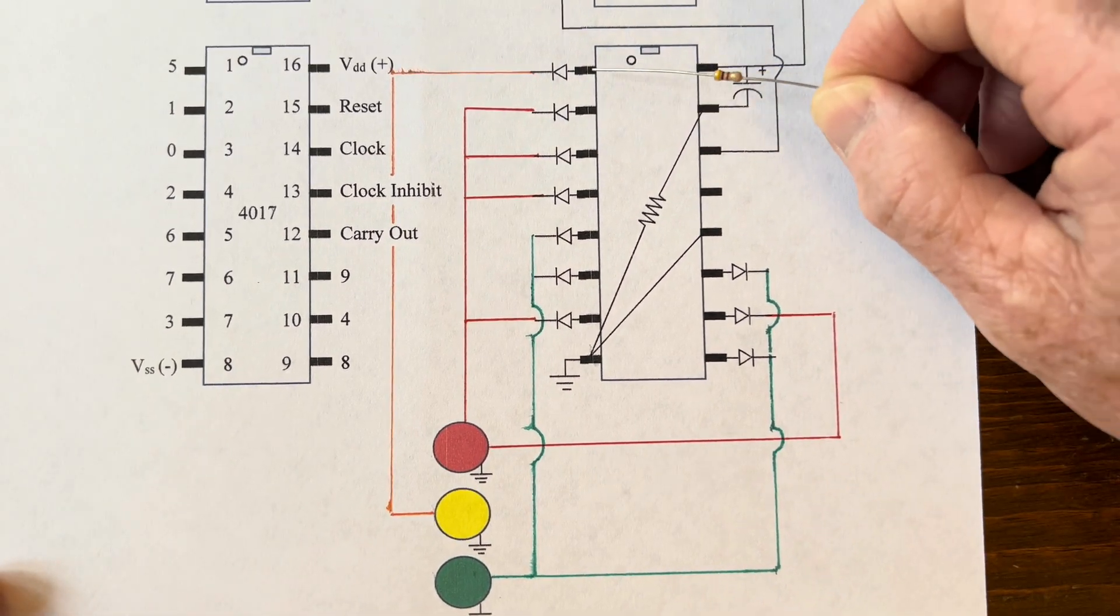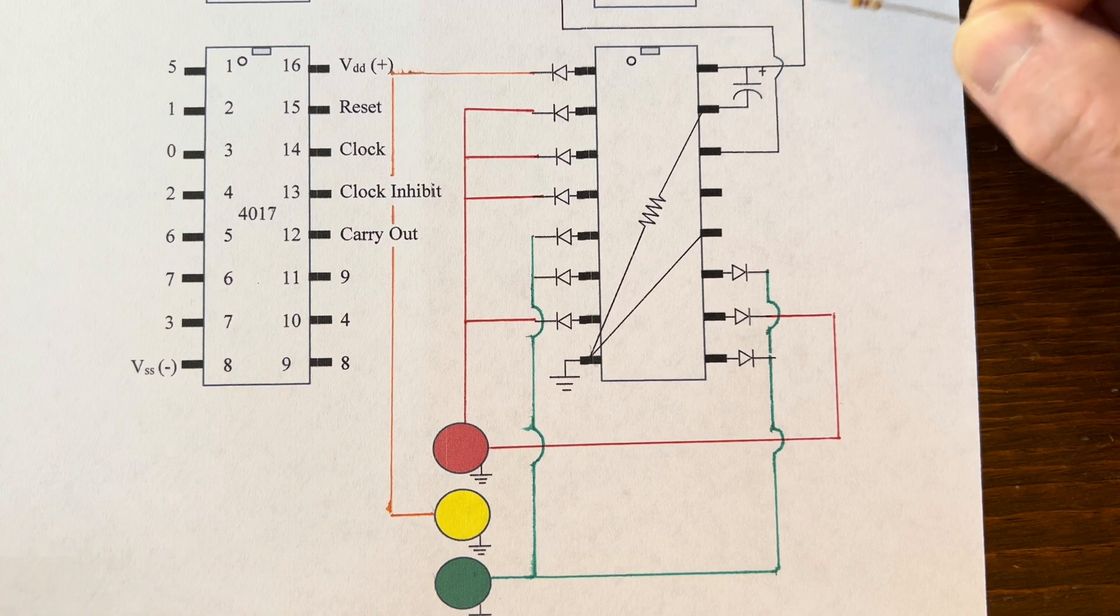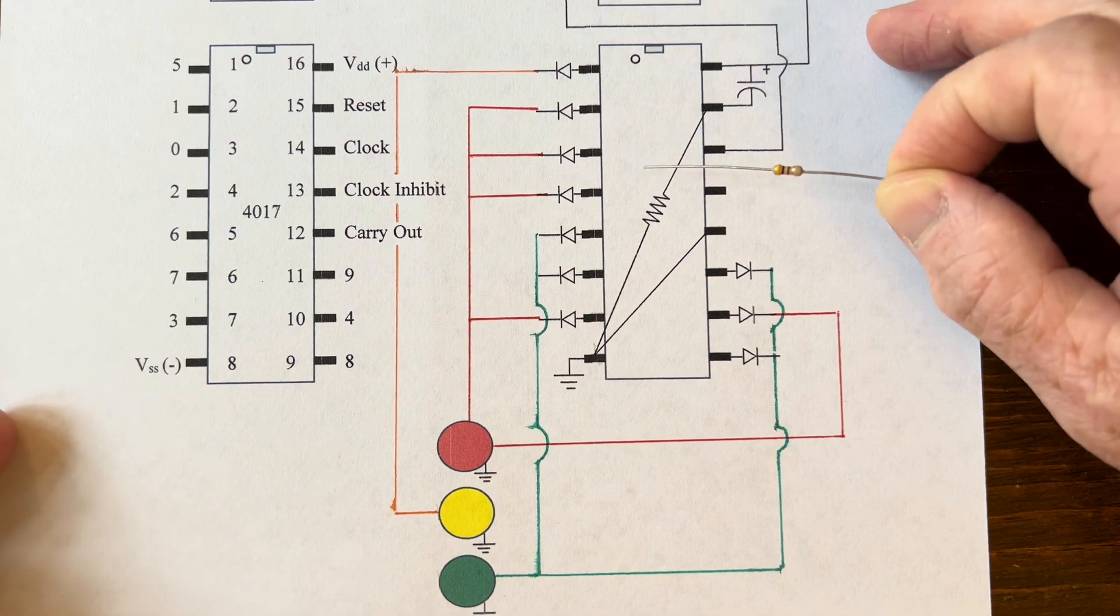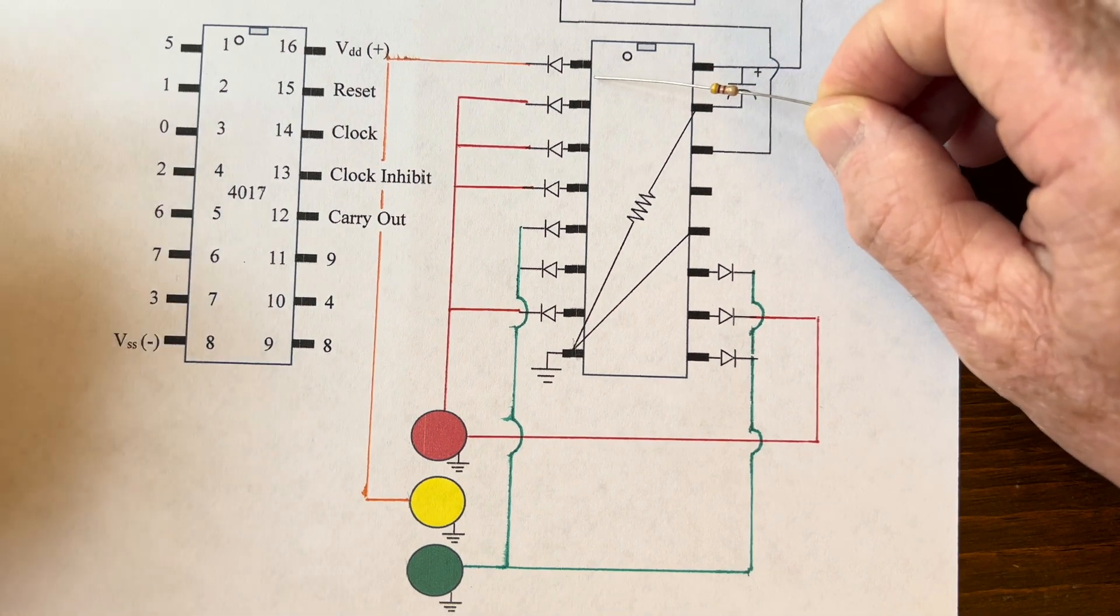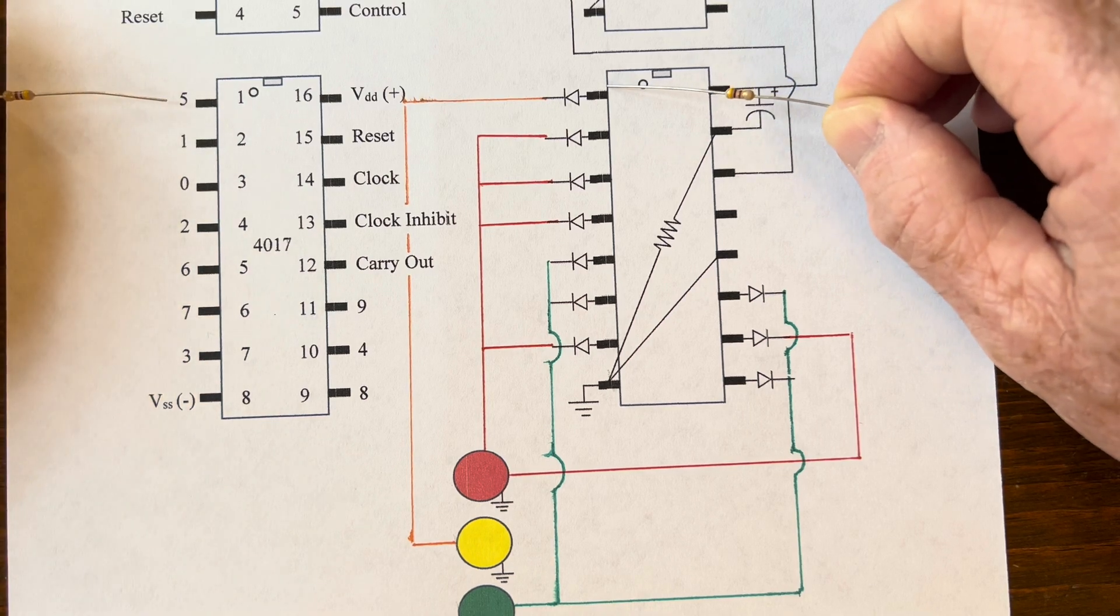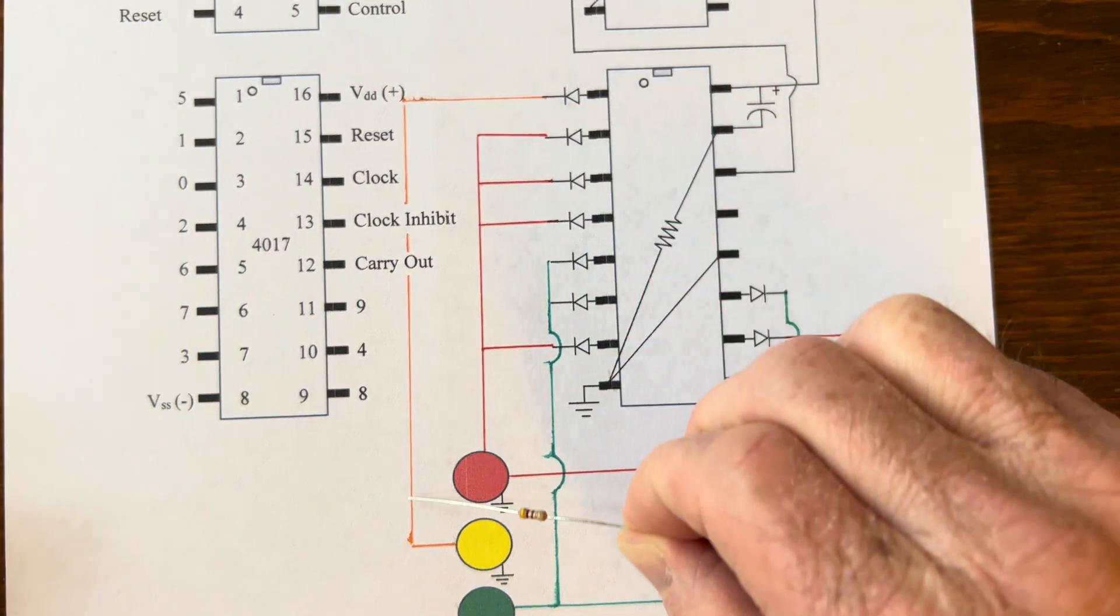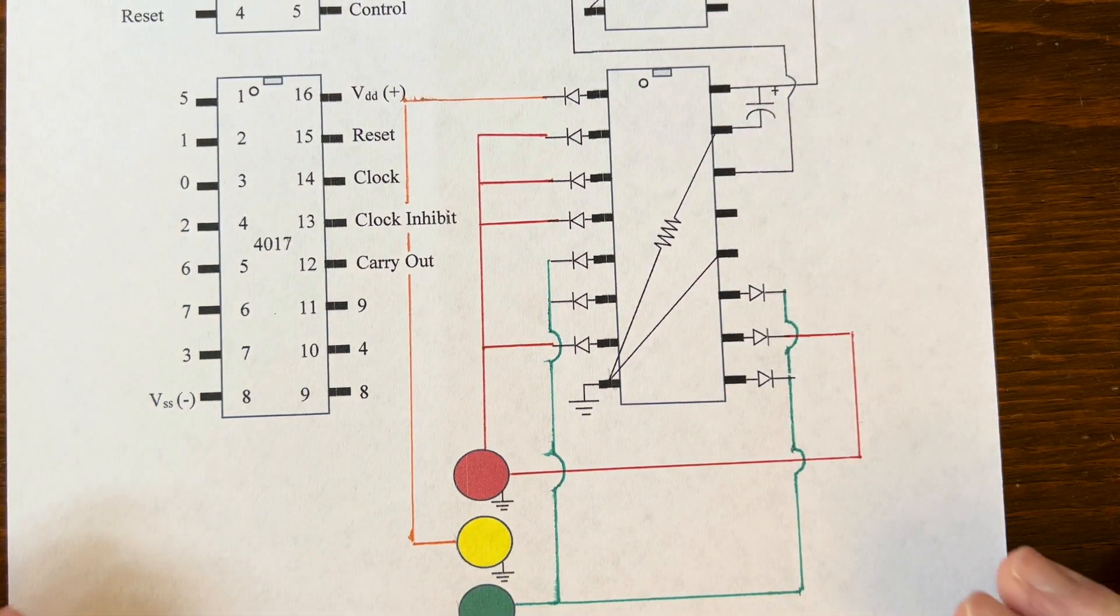And then we only need 10 percent. And remember, we have a decade counter. And we're going to use number five here. And that is going to be the only time the yellow is going to be on.